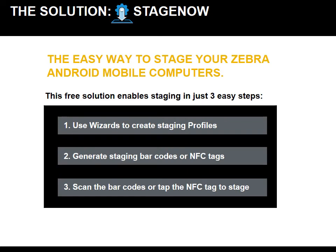The solution? StageNow — the easy way to stage your Zebra Android mobile computers. This tool is free of charge and enables you to get your staging done in three easy steps. First, you can use step-by-step wizards provided through the tool to create your profiles. This makes it really simple and eliminates the possibility of errors. Once your profiles are created, you can generate staging barcodes and NFC tags. And lastly, take your devices out of the box and scan the NFC tag or the barcodes to stage your devices.